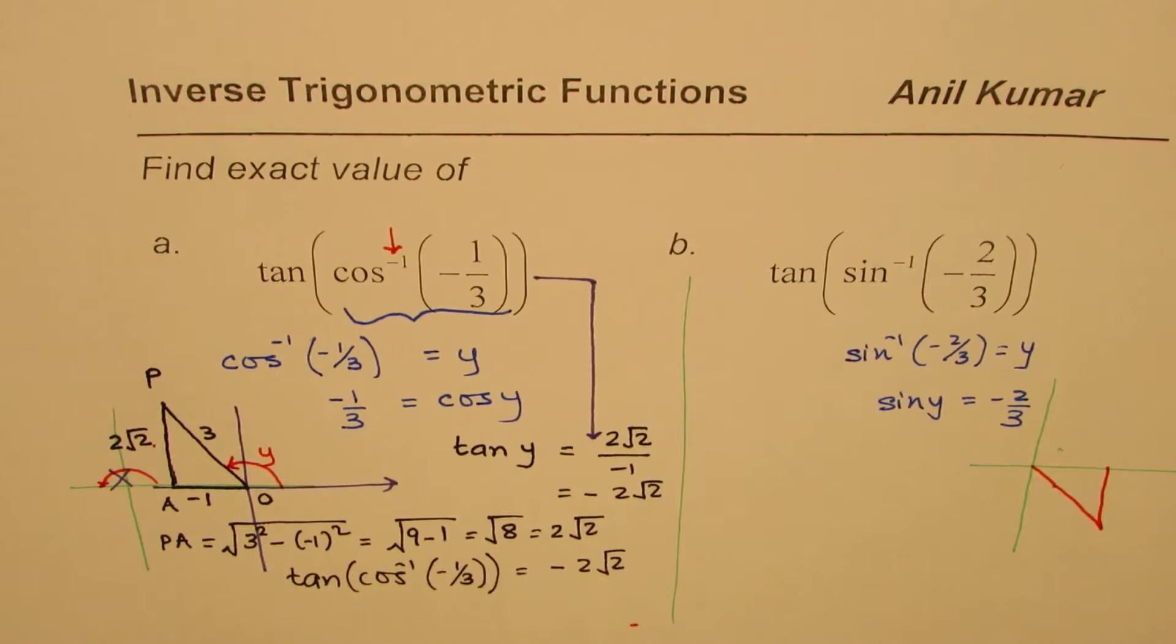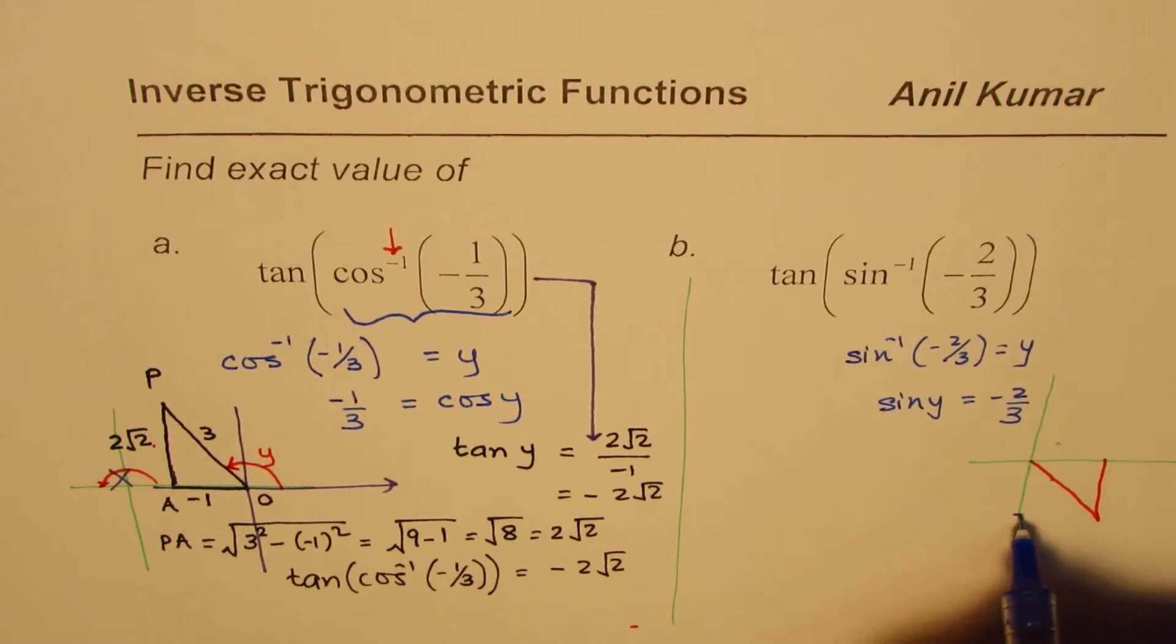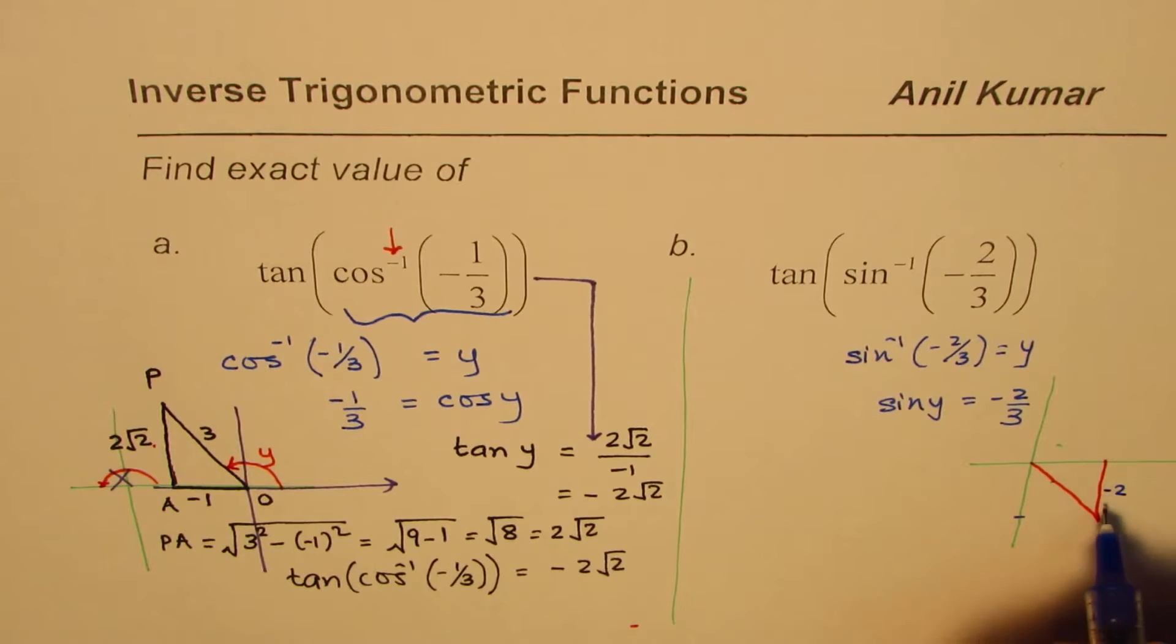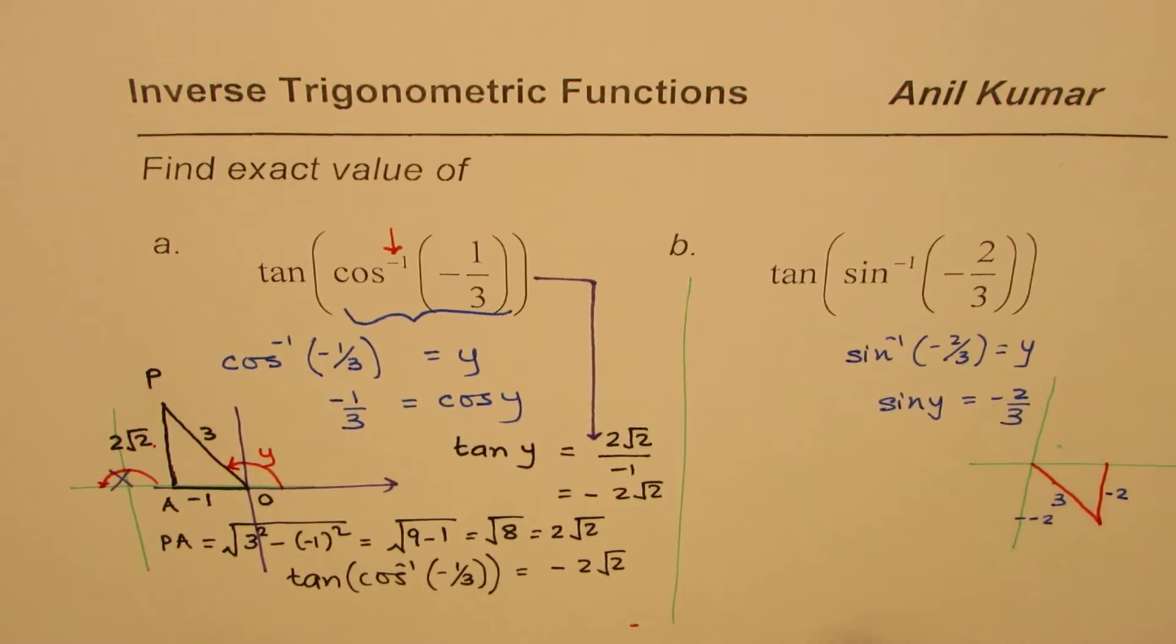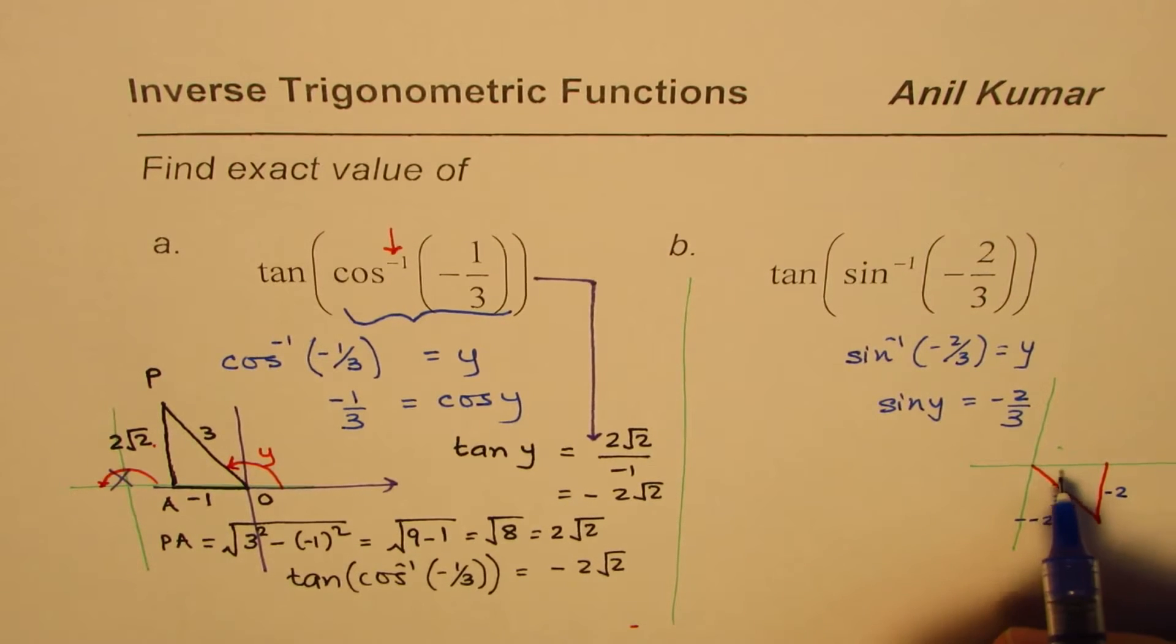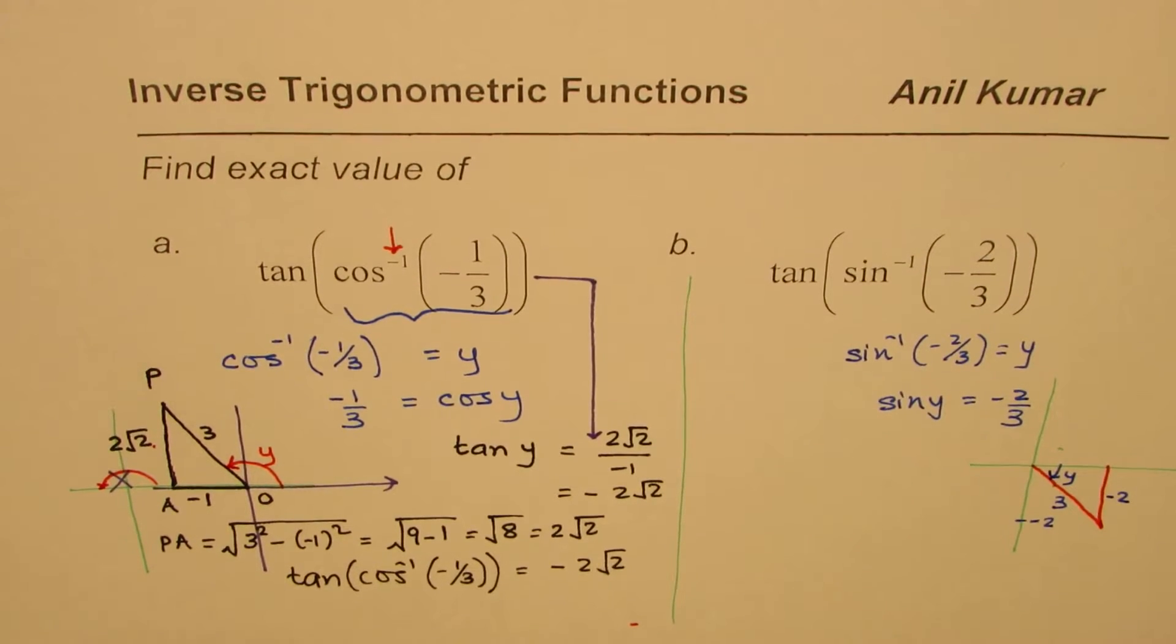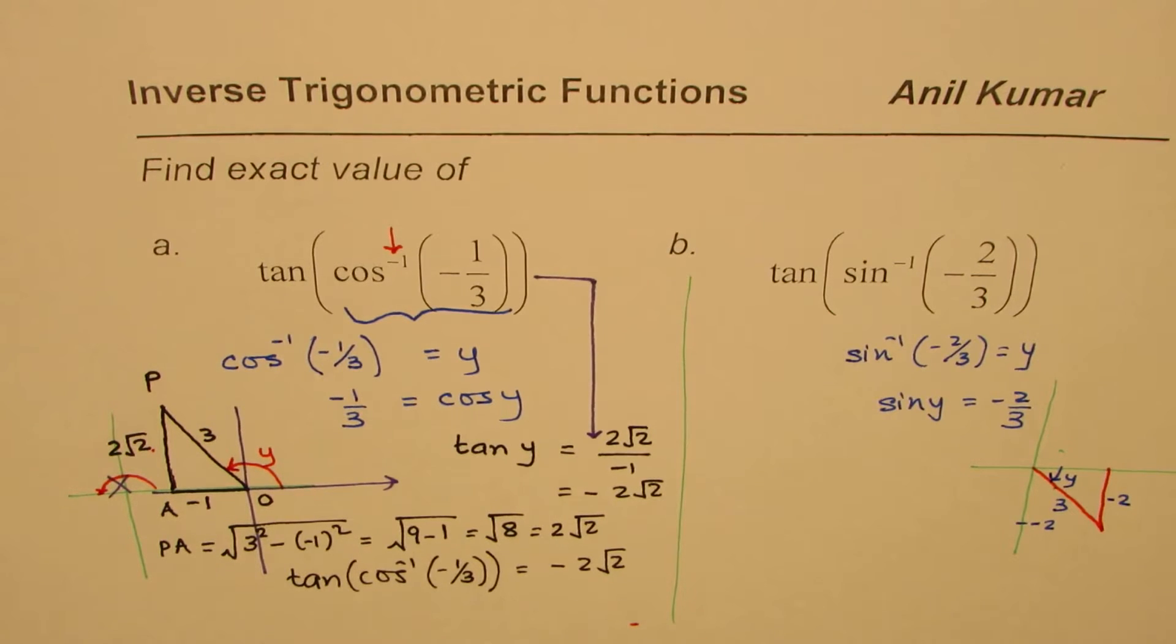So the triangle form will be kind of like this. In which minus 2 is this point. So this is minus 2 going downwards, that's the whole idea. That is the triangle which you should be looking for, and y is this angle. Negative because we are going clockwise. So clockwise angles are treated as negative.